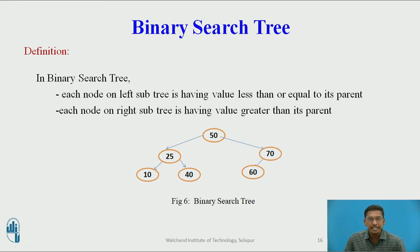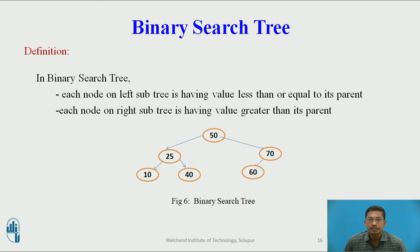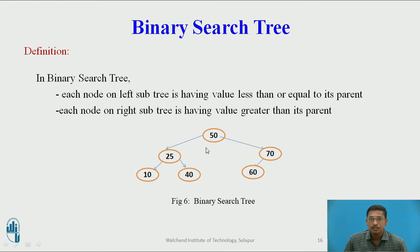The next important concept is the binary search tree, which we call BST. In a BST, each node on the left subtree has a value less than or equal to its parent, and each node on the right subtree has a value greater than its parent. For example, 50 is the root node — all nodes on the left side of 50 are less than 50, and all nodes on the right side are greater than 50.